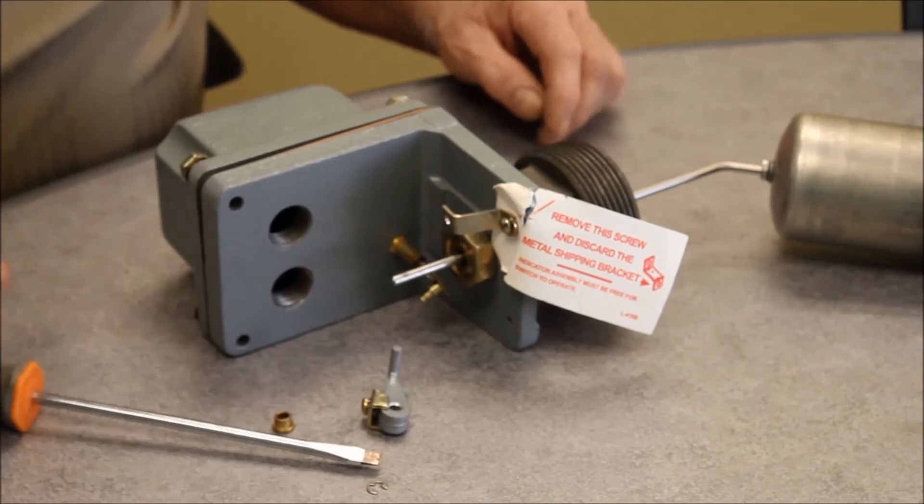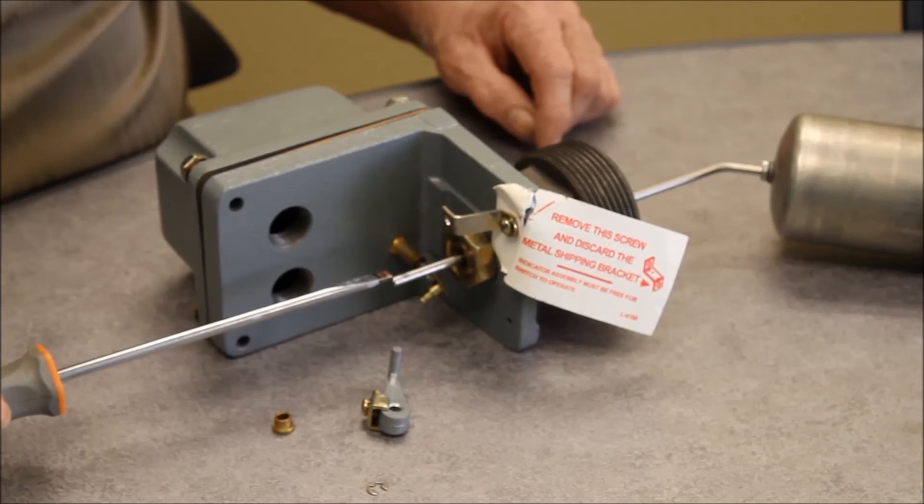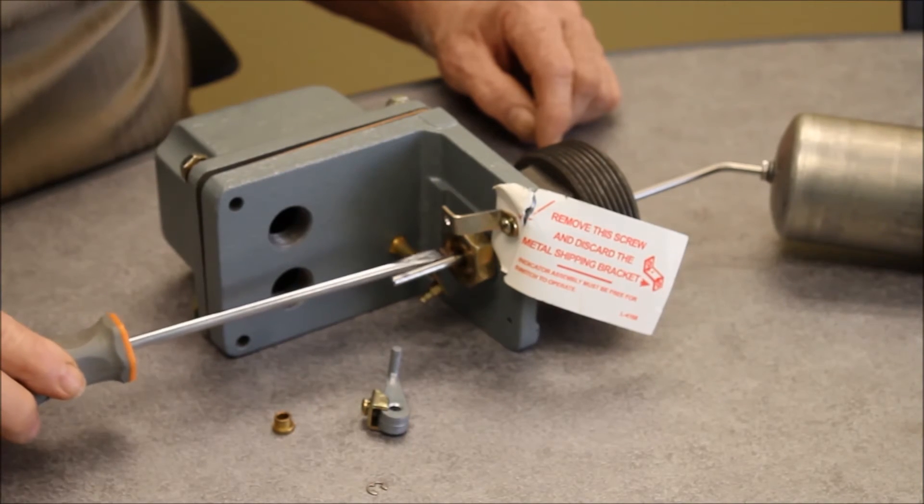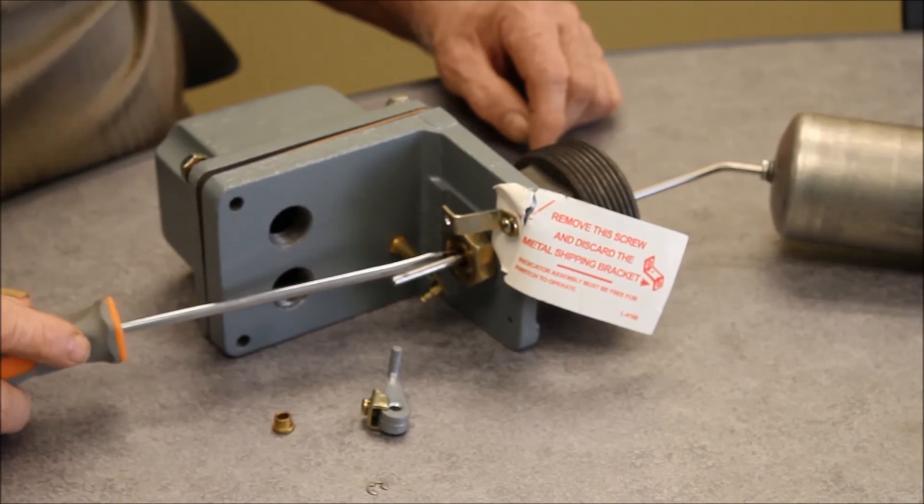When the inner bushing slides out, a new quad ring seal can be slid over the shaft and packed tightly into the cavity.